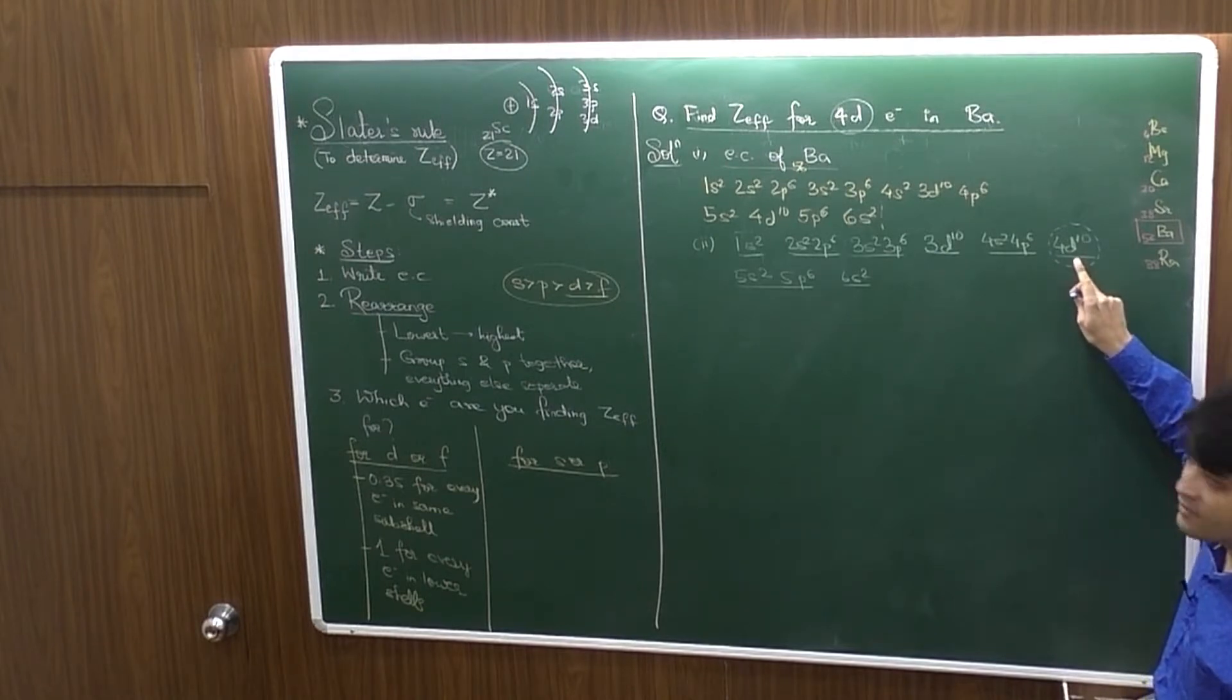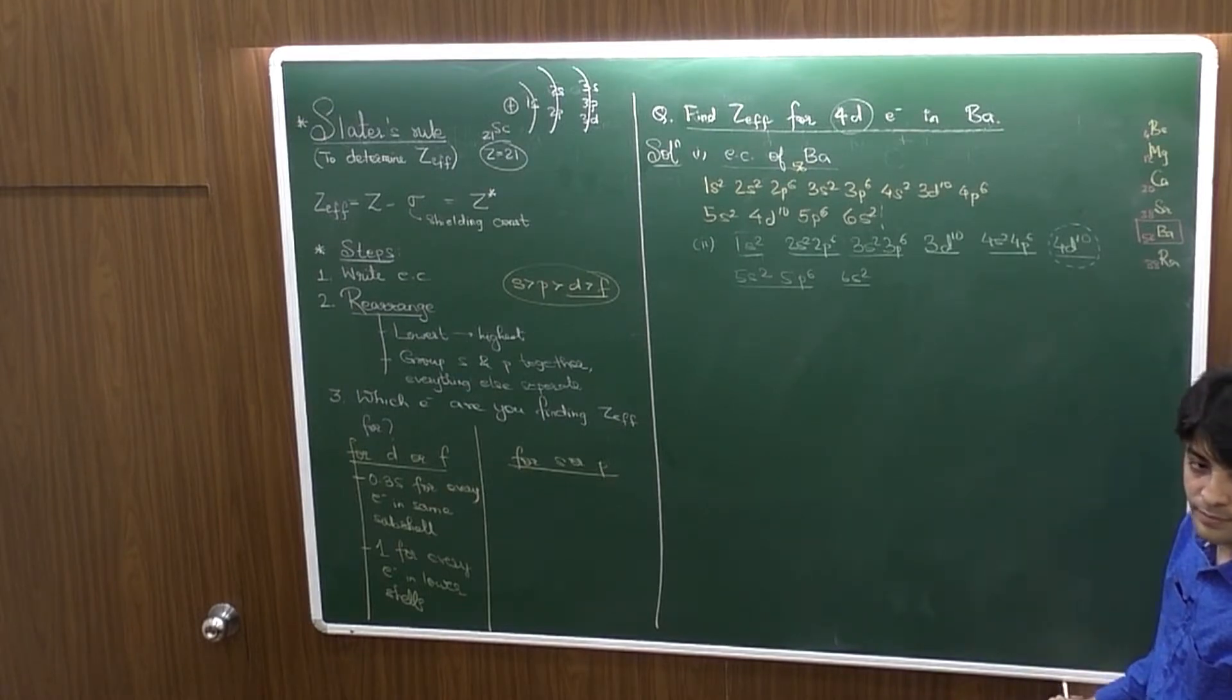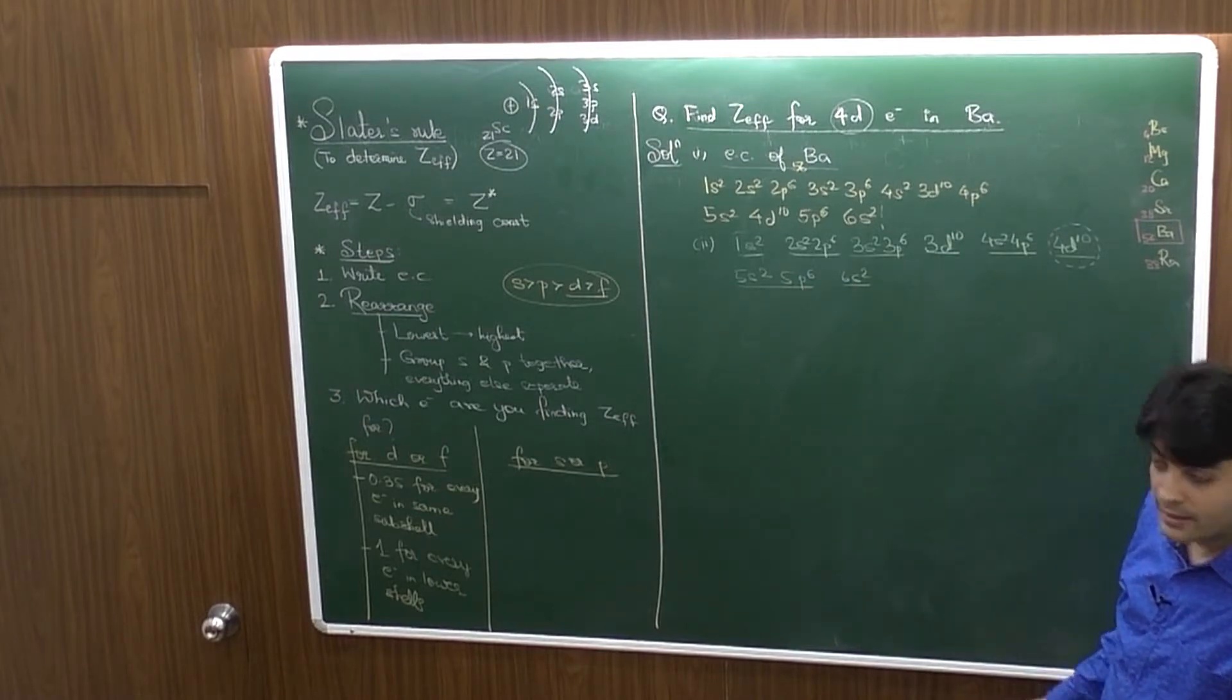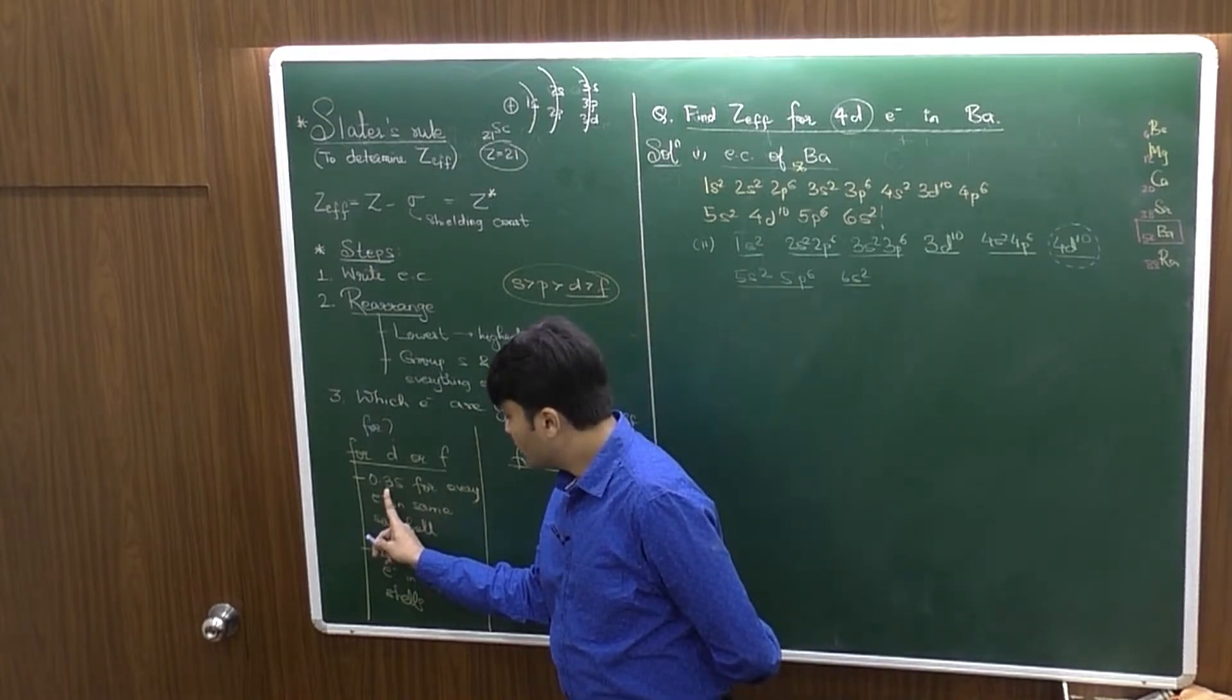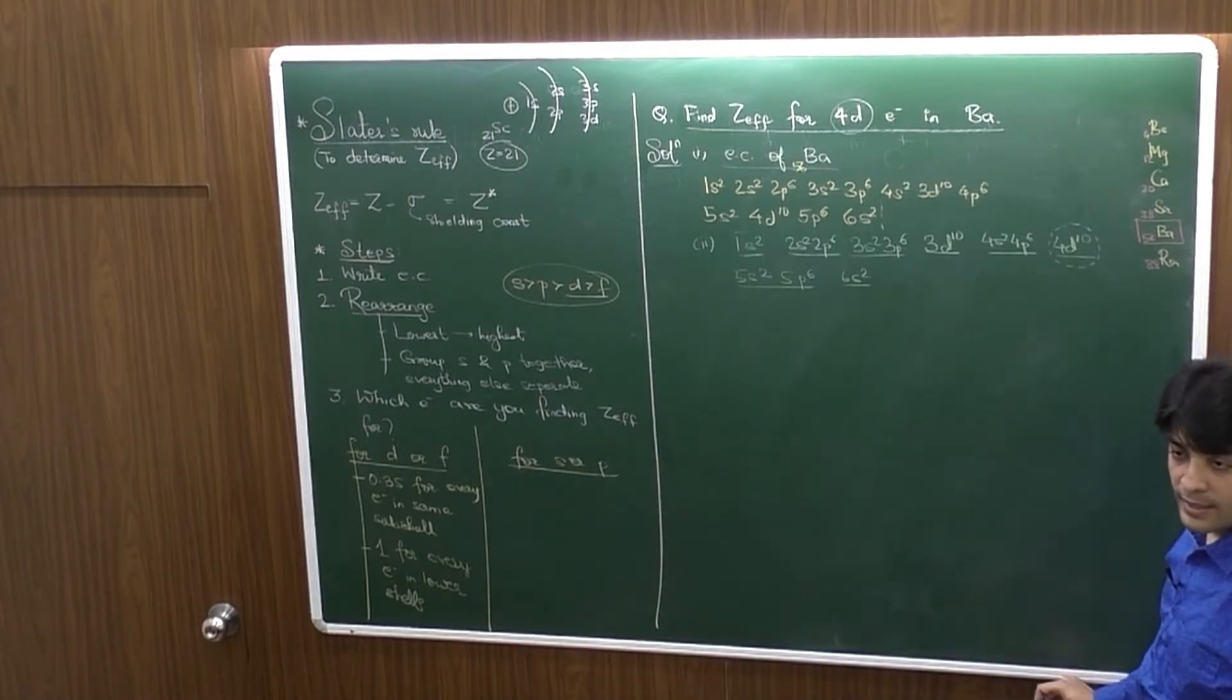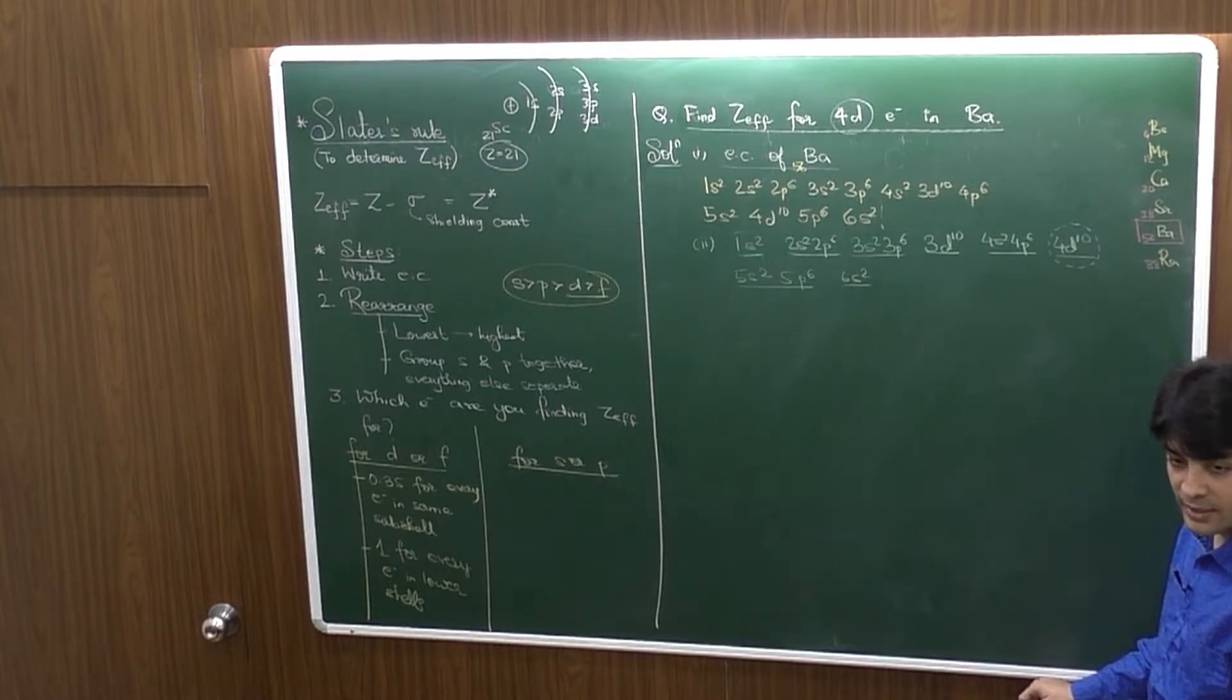We are finding the effective nuclear charge for the 4D electron. Now, if the 4D electron is in the 4D shell, will the outer shells have the shielding for the 4D electron? No. So, I am taking only the inner shells. If I'm looking at 4D, then these electrons will not shield. You have to take 0.35 as a factor for every electron in the same sub shell. 4D has how many electrons? 10.